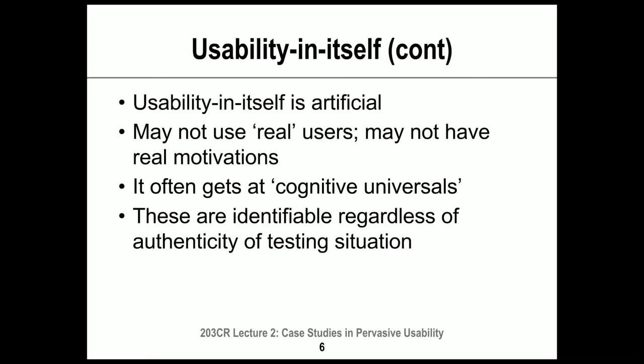The limitation of usability in itself — running tests in labs to look at particular tasks — is that it's artificial. It may not use real users, and those users may not have any real reason for using the technology other than being asked for the test. However, usability tests do get at what's called cognitive universals. Cognition means mental processing, and some mental processing is universal — not affected by age, nationality, or sex.